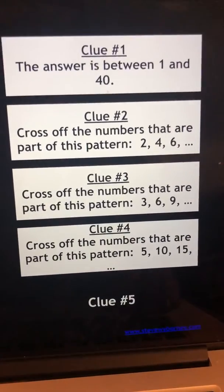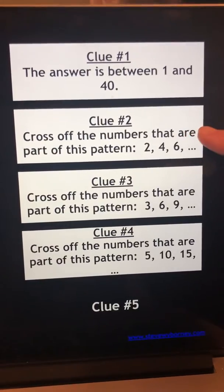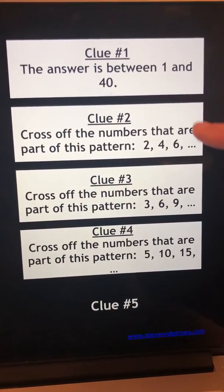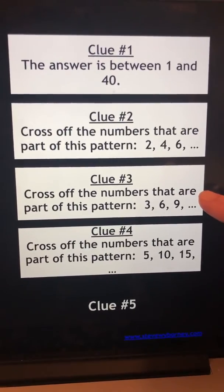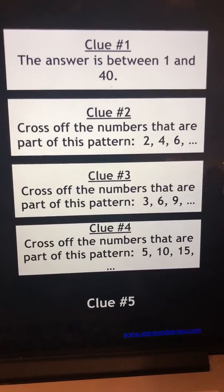We want to make sure we don't have numbers that are counting by twos: two, four, six. We want to make sure that our number is not part of our counting by threes pattern: three, six, nine.